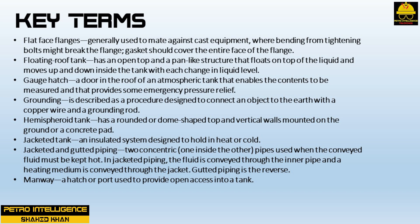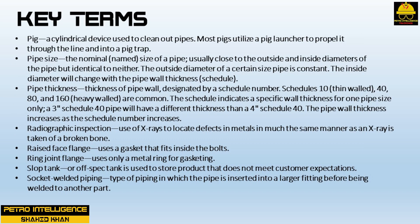A gauge hatch is a door in the roof of an atmospheric tank that enables the contents to be measured and provides some emergency pressure relief. Grounding is a procedure designed to connect an object to the earth with a copper wire and a grounding rod. A hemispheroid tank has a rounded or dome-shaped top and vertical walls mounted on the ground or a concrete pad. A jacketed tank is an insulated system designed to hold in heat or cold. Jacketed and gutted piping are two concentric pipes — one inside the other — used when the conveyed fluid must be kept hot. In jacketed piping the fluid is conveyed through the inner pipe and a heating medium through the jacket; gutted piping is the reverse. A manway is a hatch or port used to provide open access into a tank.